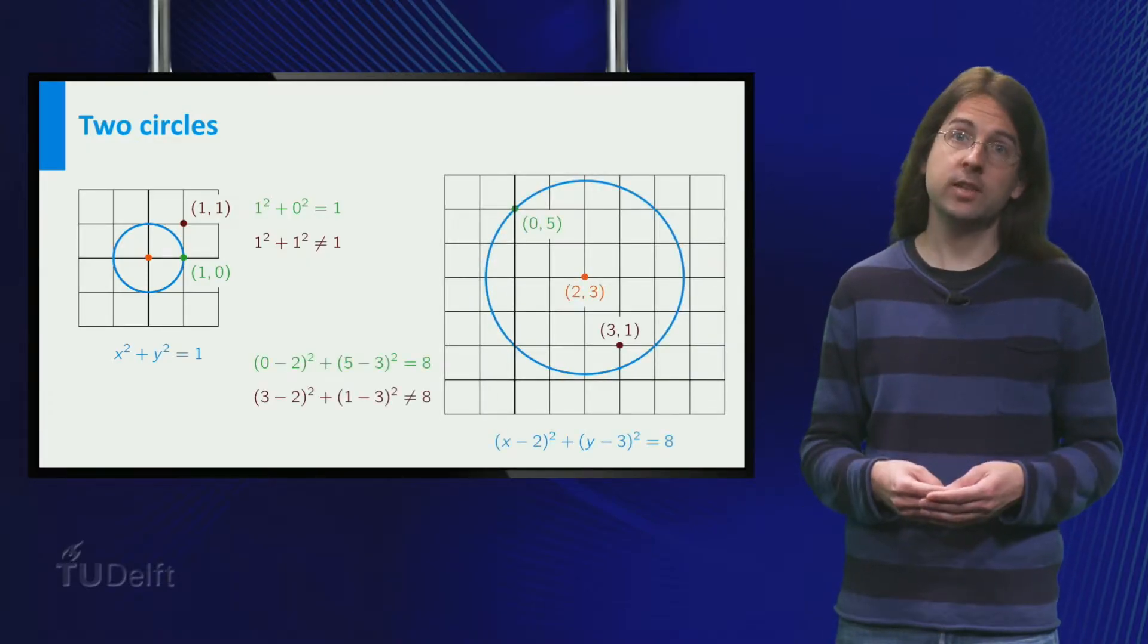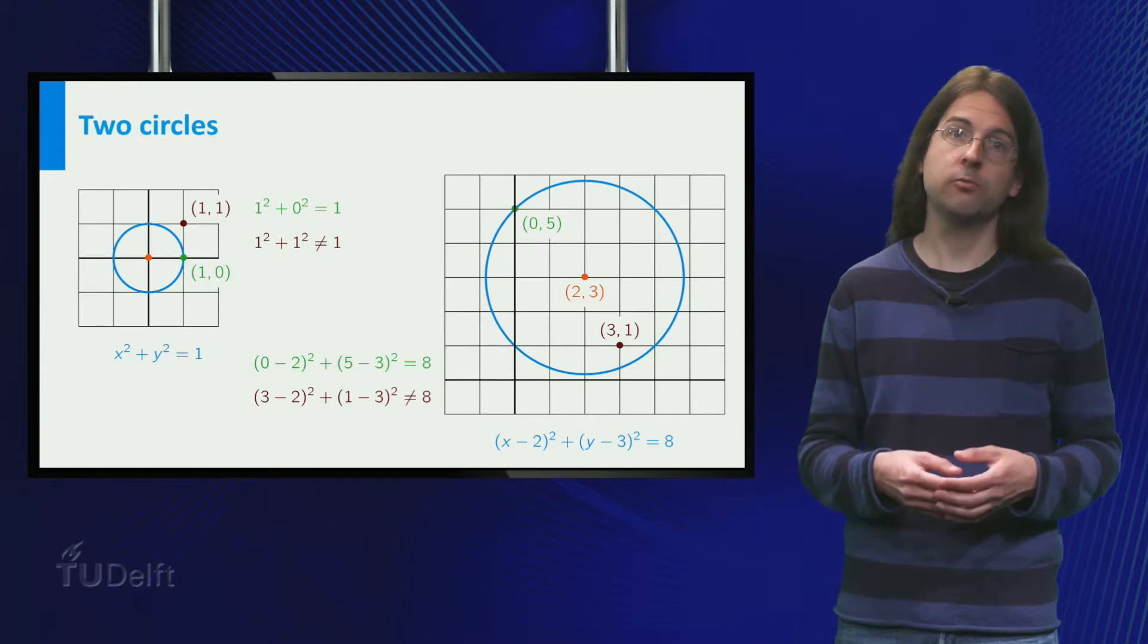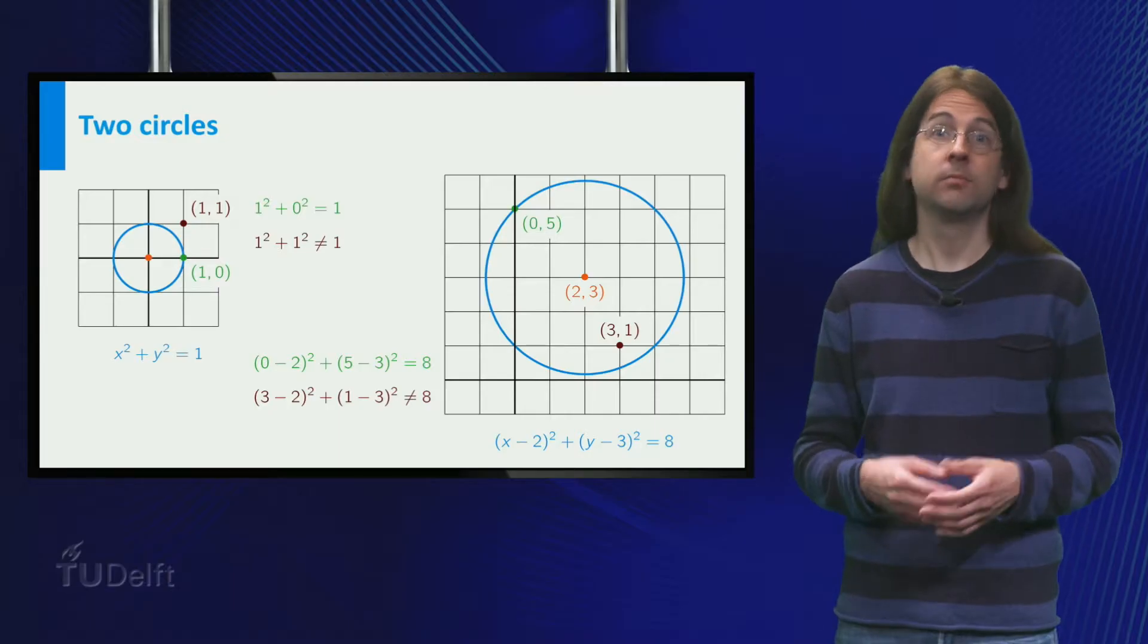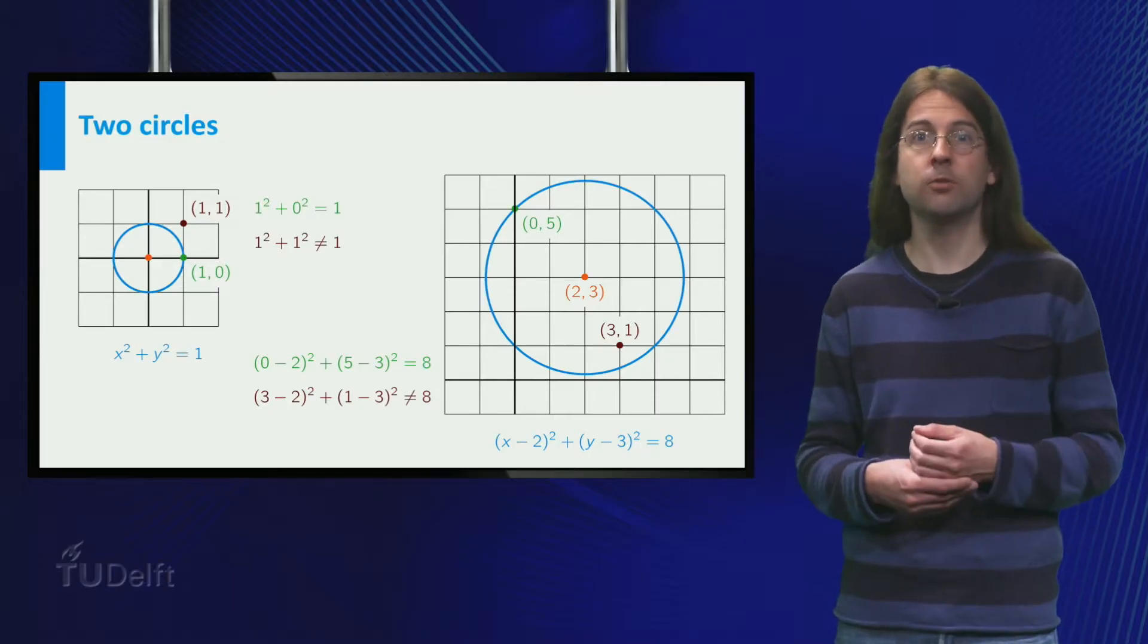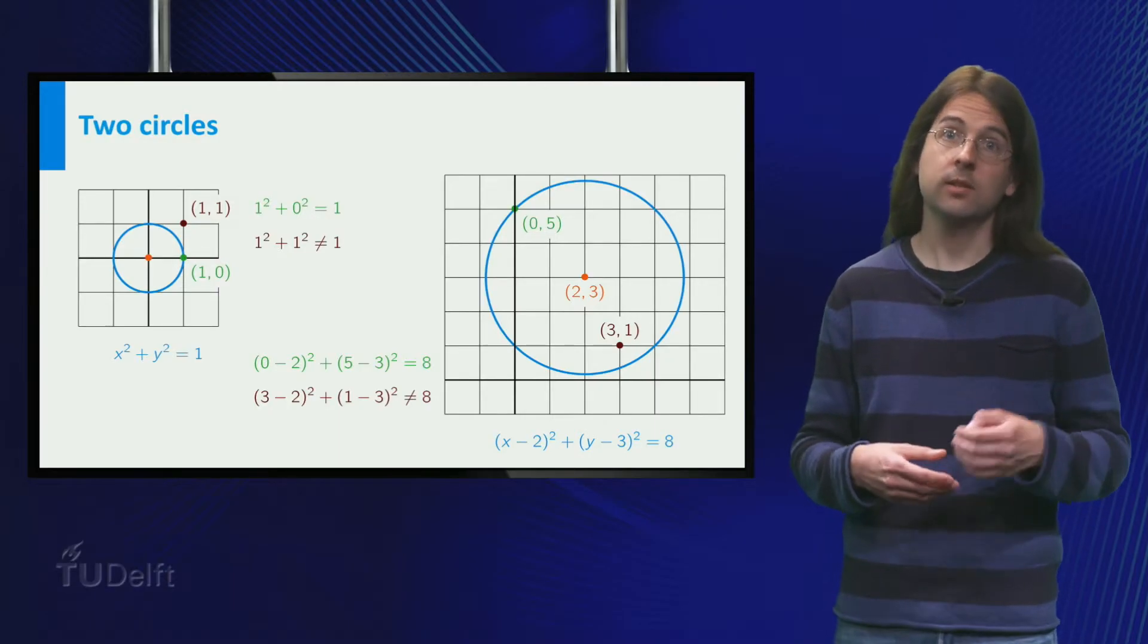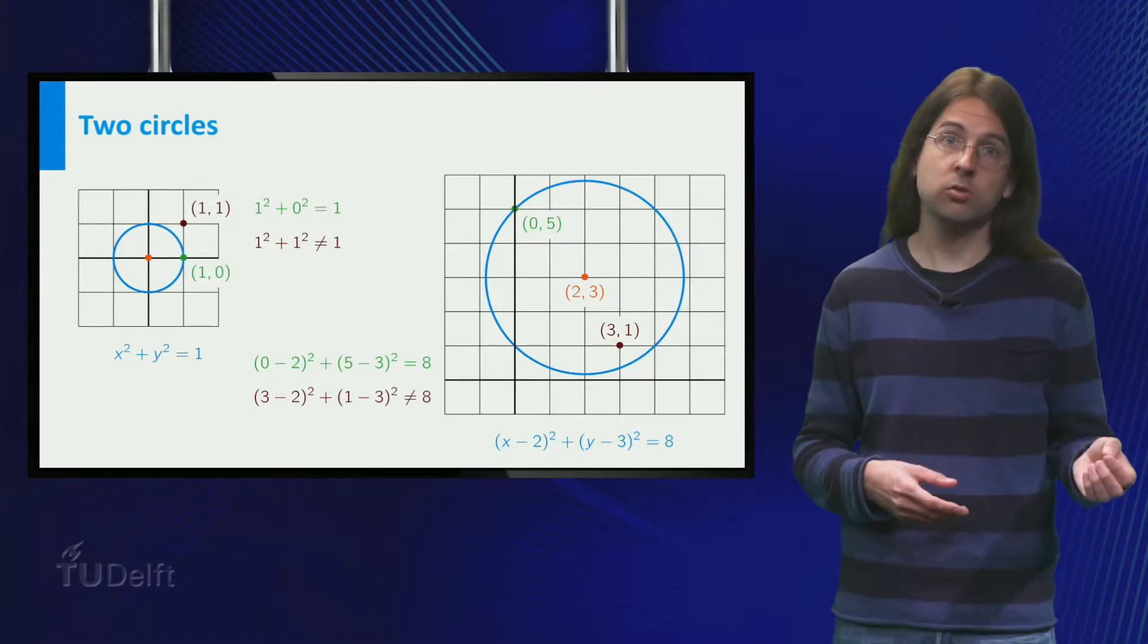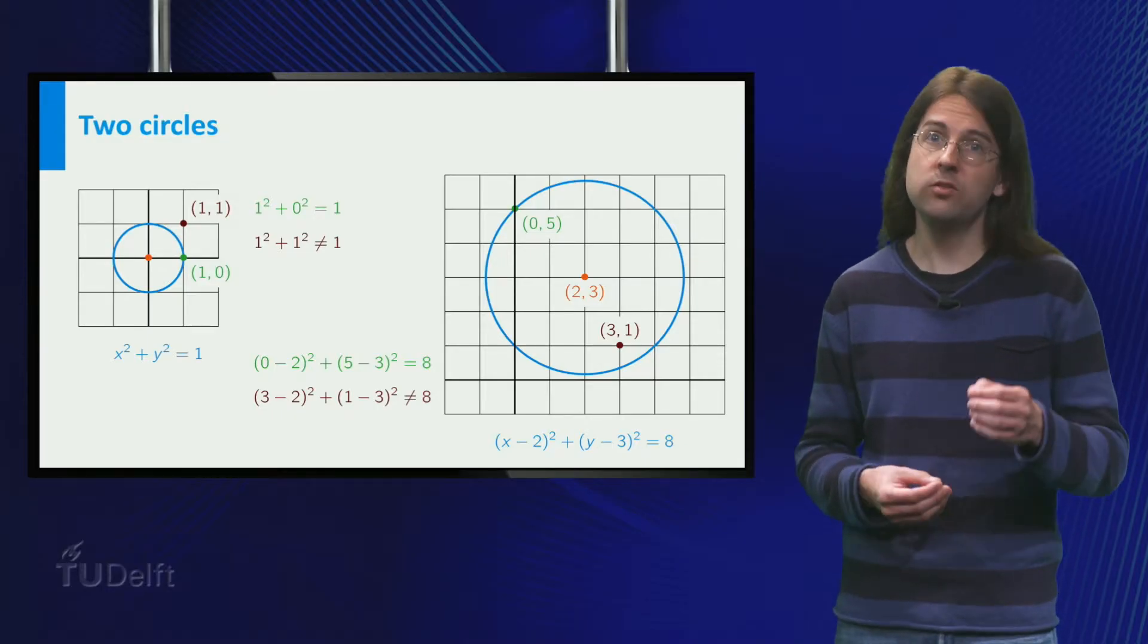Another circle is x minus 2 squared plus y minus 3 squared equals 8, which passes through 0, 5 as x minus 2 squared plus 2 squared equals 8, but not through 3, 1 as 1 squared plus minus 2 squared is not 8.